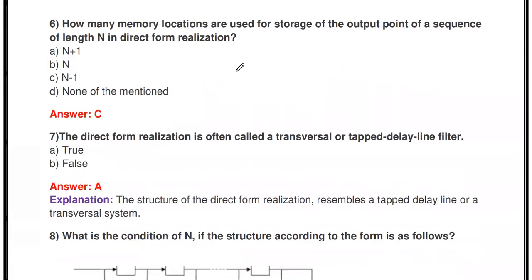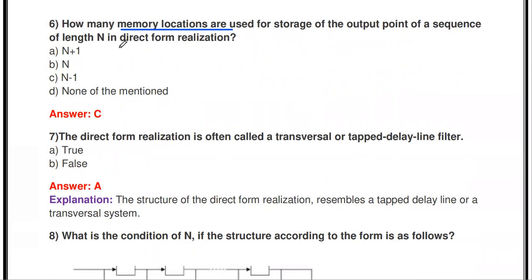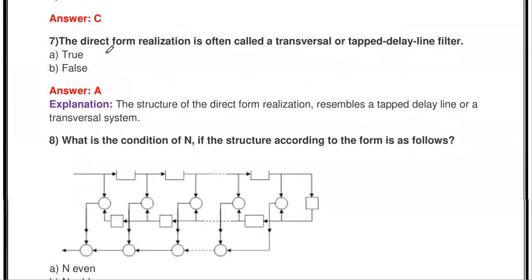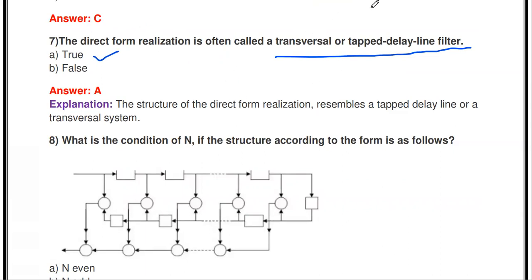How many memory locations are used to store the output points of a sequence of length N in direct form realization? The answer is N-1 memory locations. So: N multipliers, N-1 adders, N-1 delay elements, and N-1 memory locations. Also, the direct form realization is often called a transversal or tapped delay line filter — that is true.